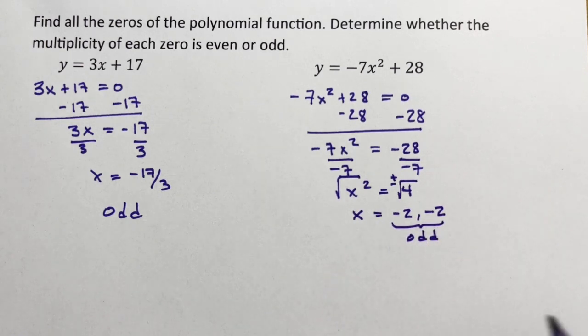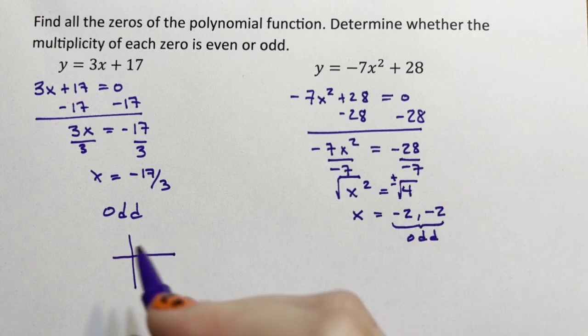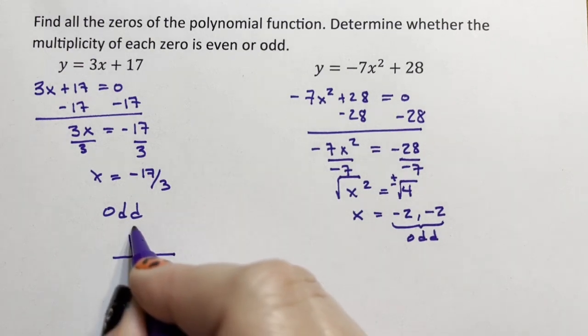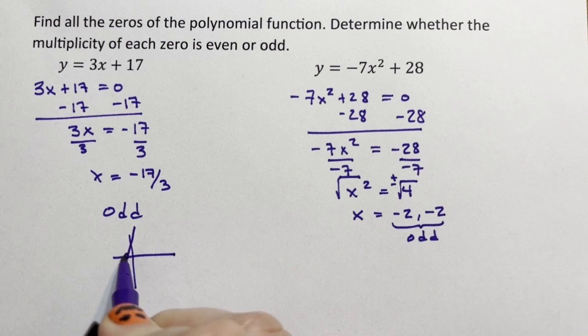If you're curious what this means, an odd multiplicity means that it crosses the x-axis.